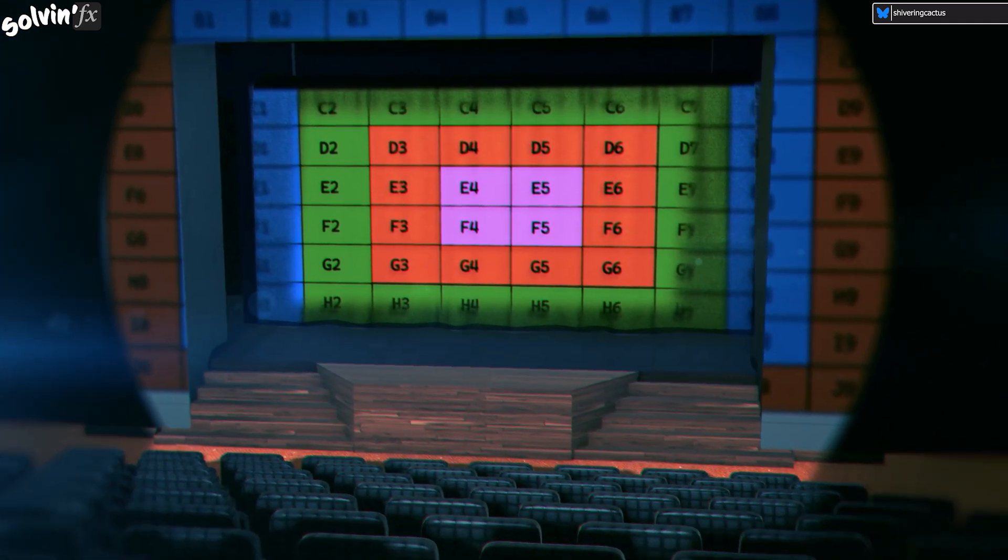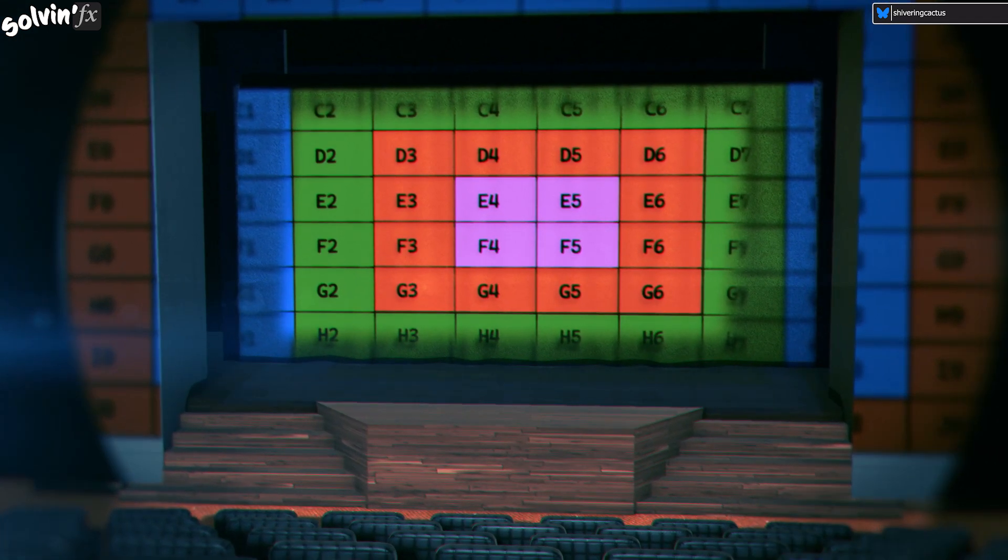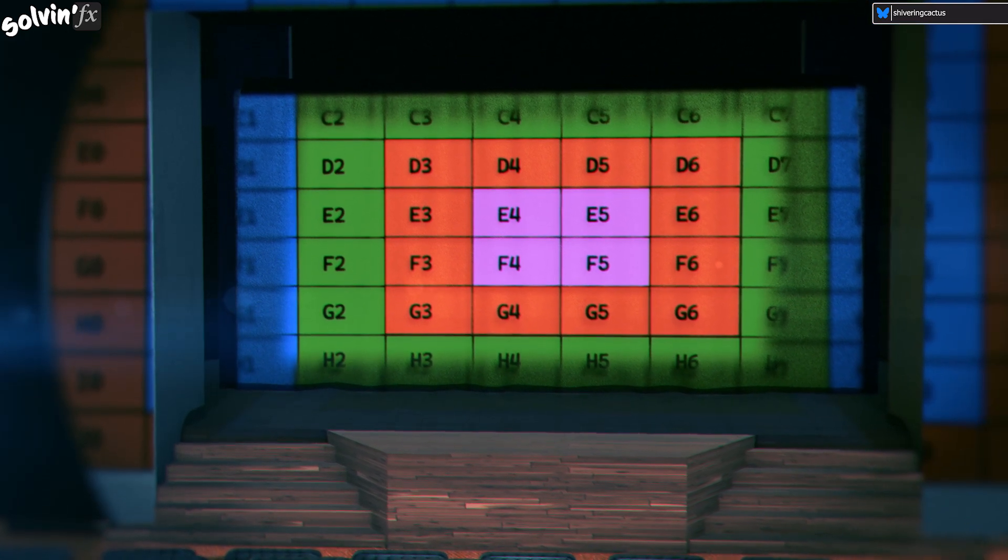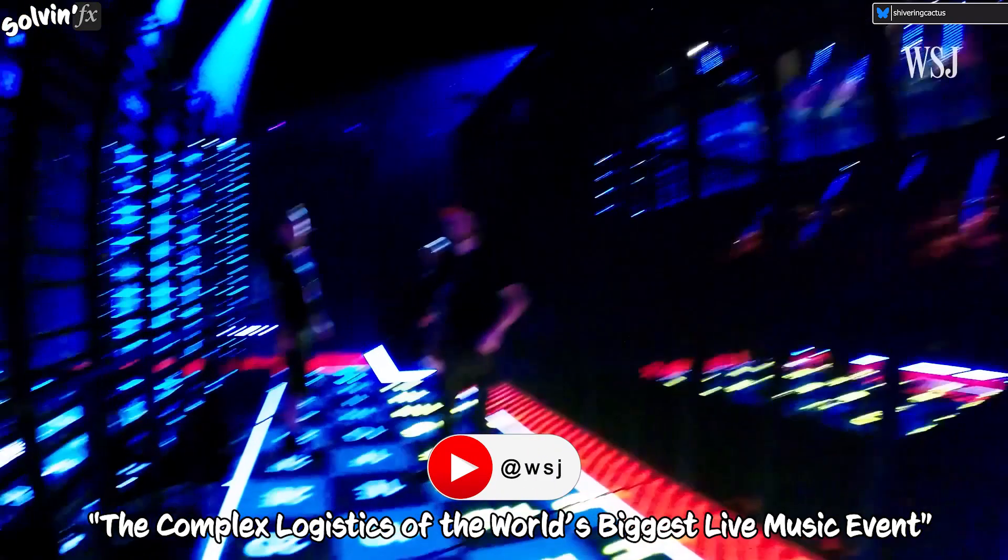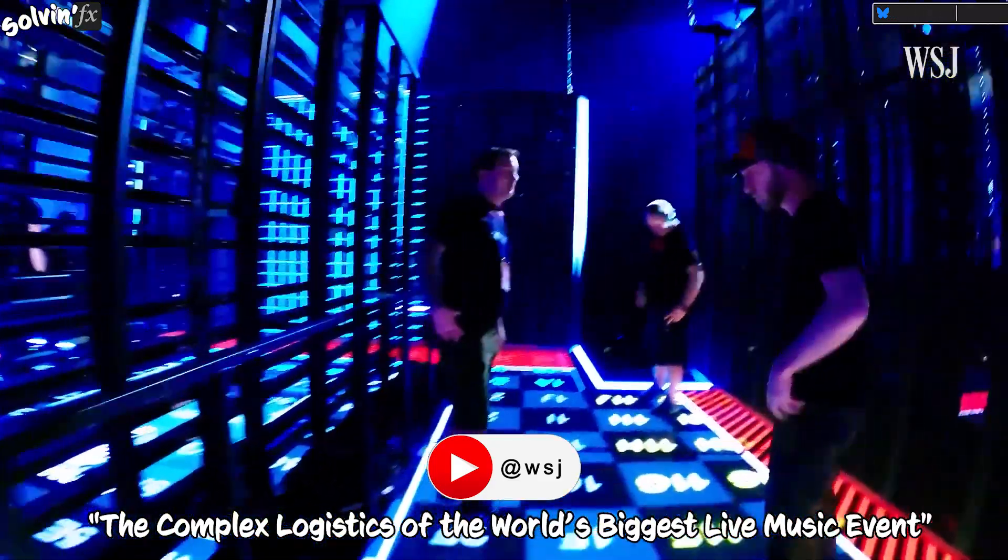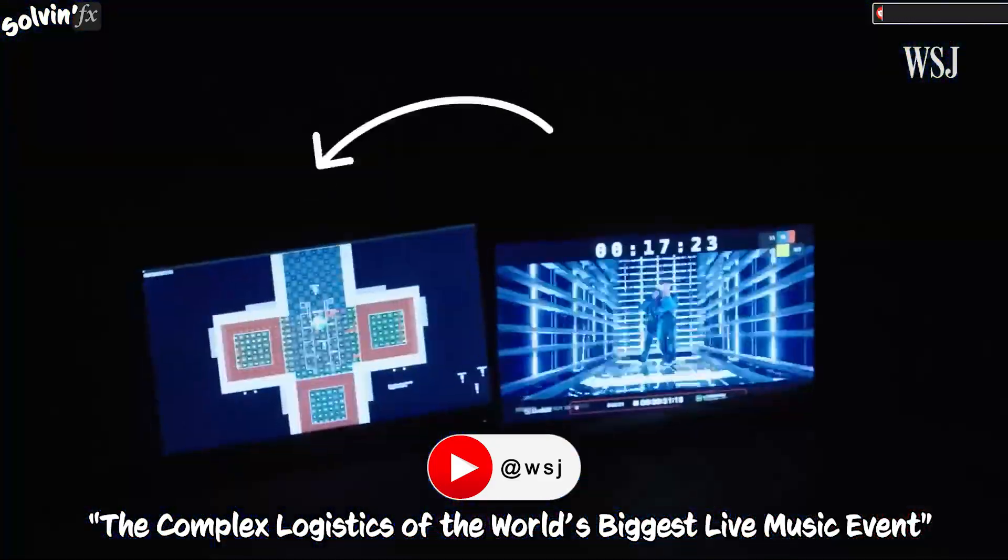The director could then say, hey, can we have the wizard's head on E3? And it would be as simple as that. At the time I thought this was very clever of me. But then I was watching a making of Eurovision, and they take alignment grids to the next level.